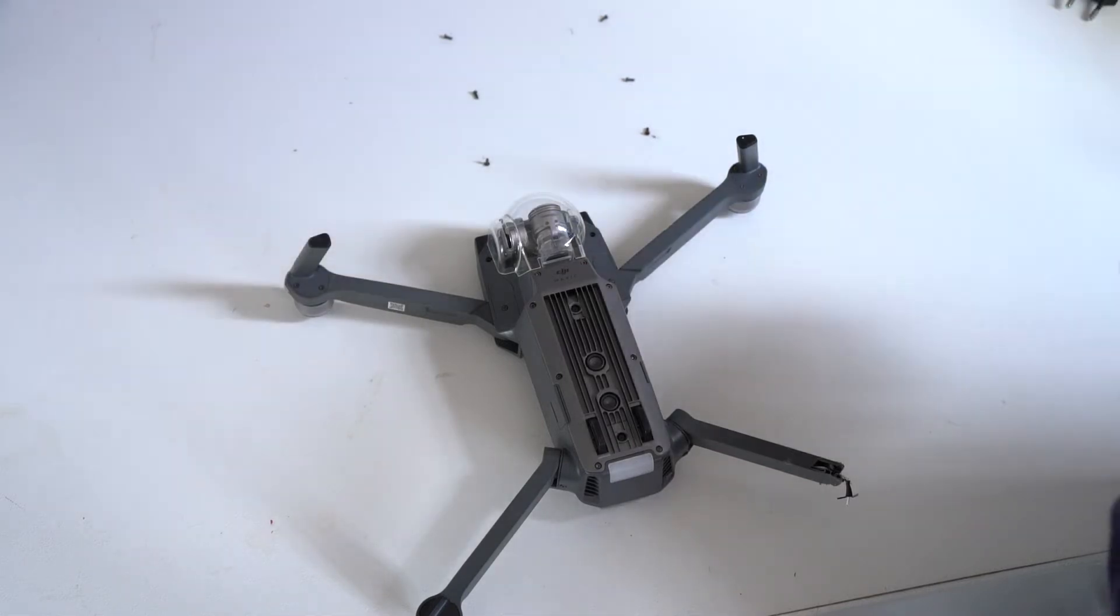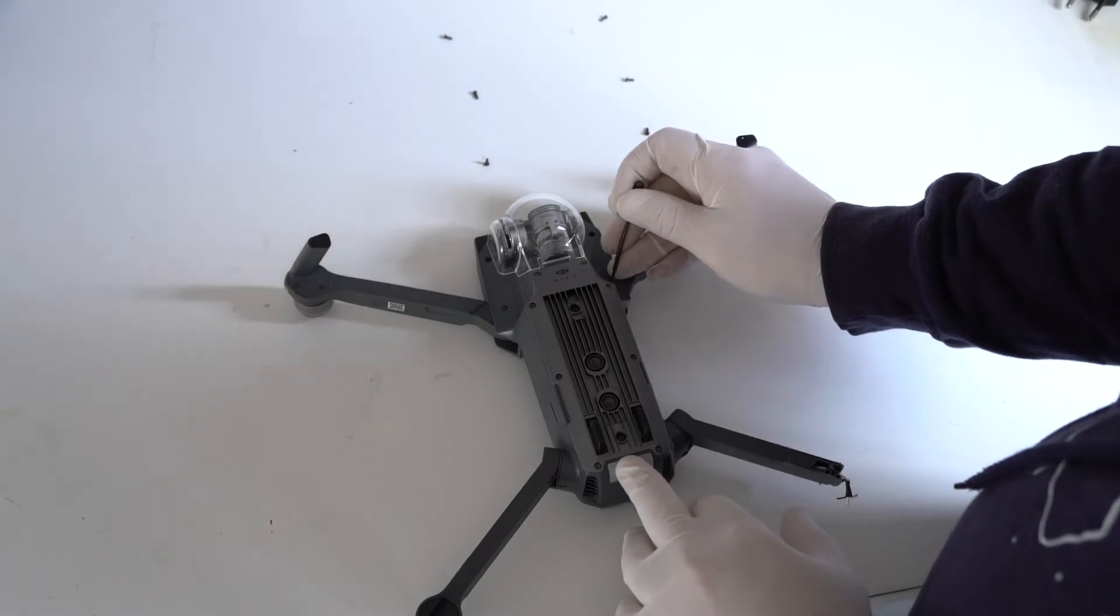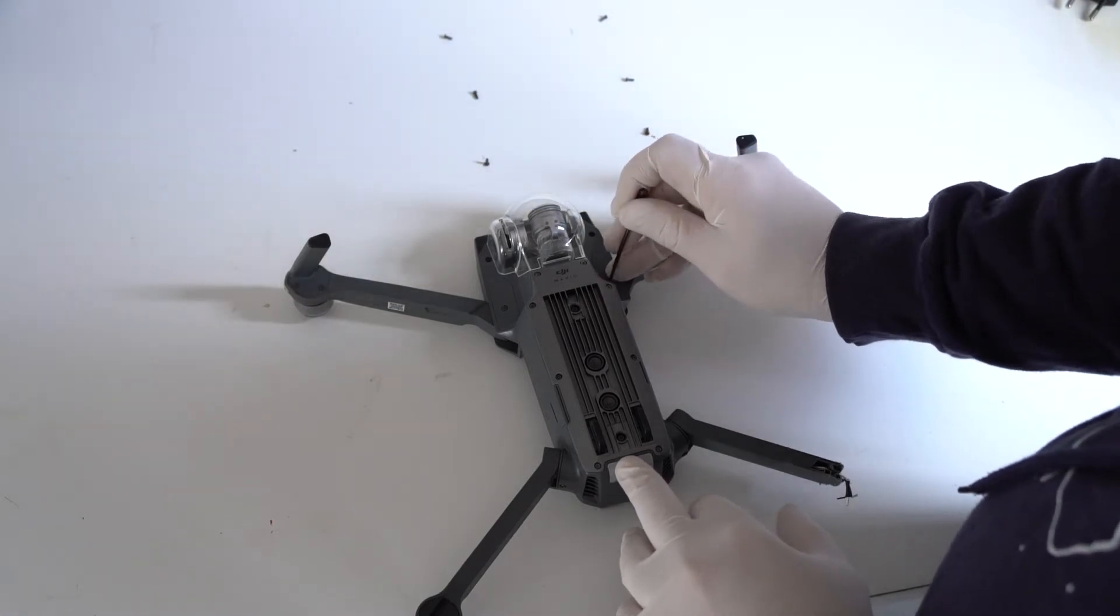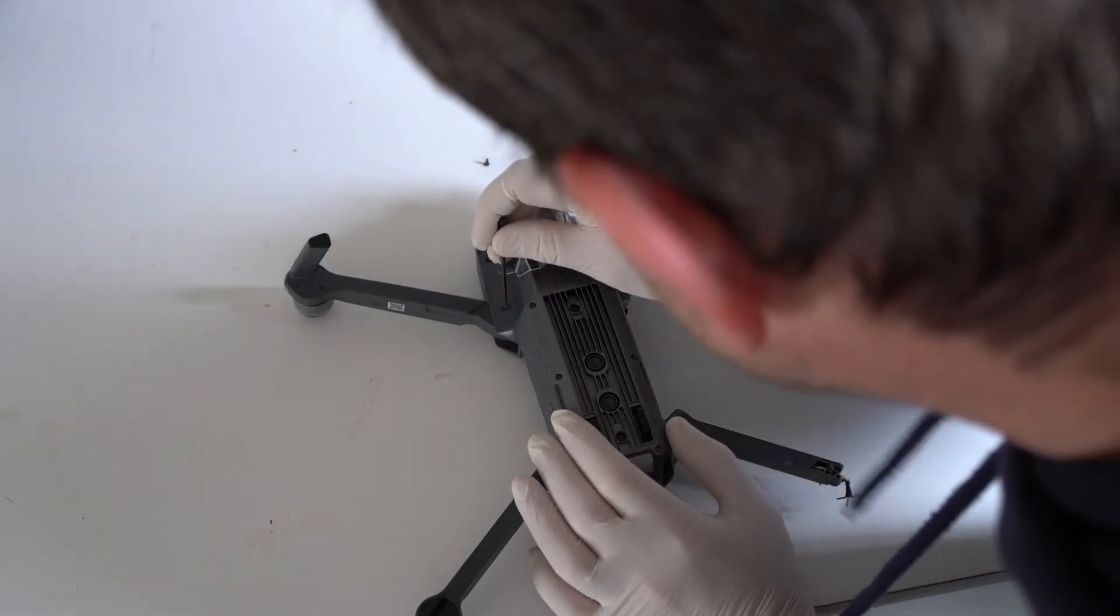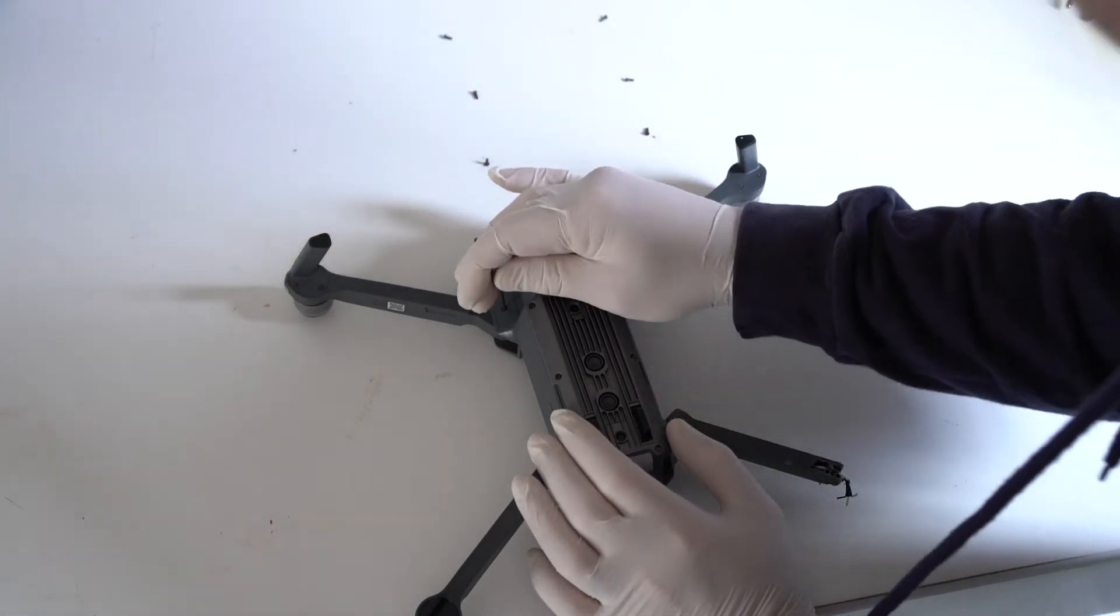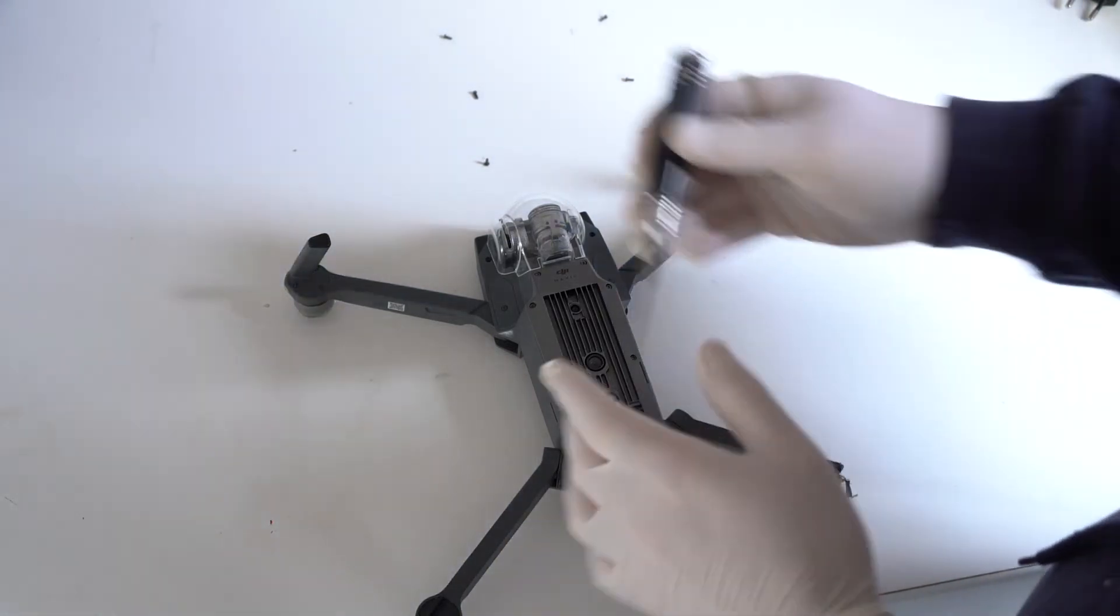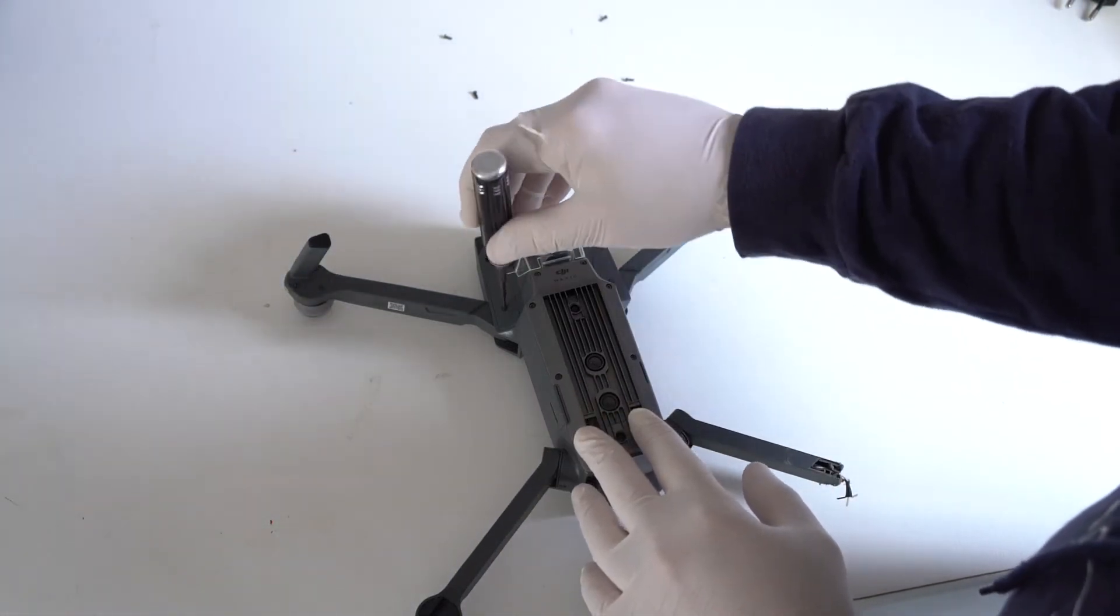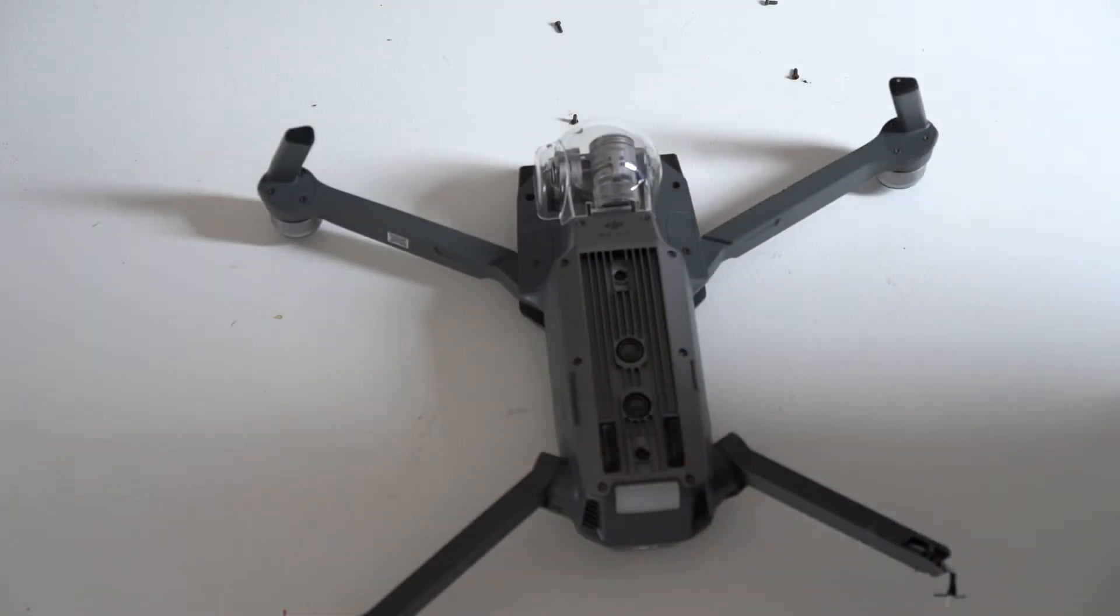These two plastic covers also have screws on. First you undo the screws. Once you undo the screws you can remove these two plastic covers. Underneath these two plastic covers are another two screws that have to be taken out before you can remove the top cover.